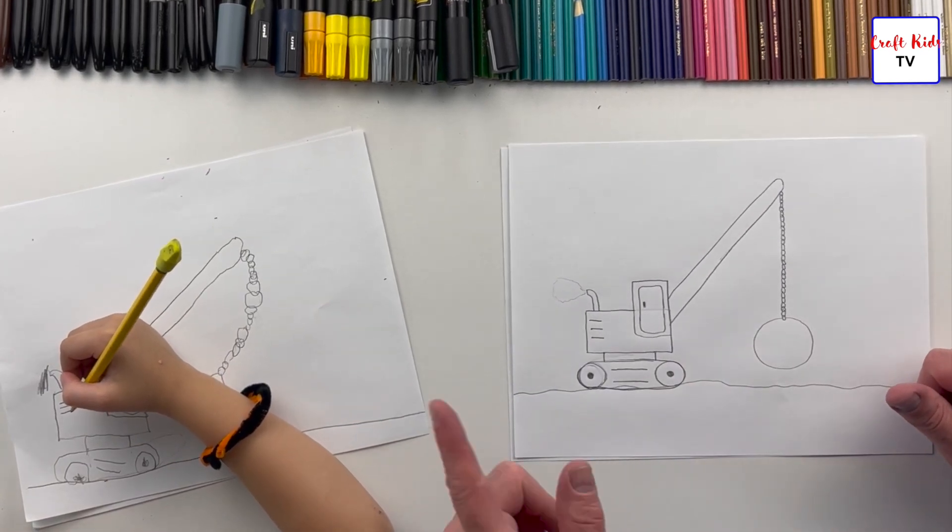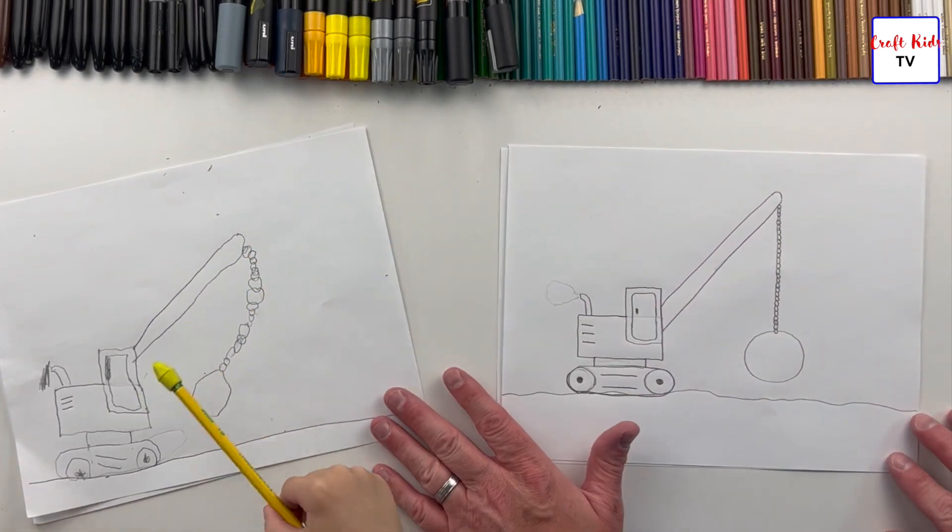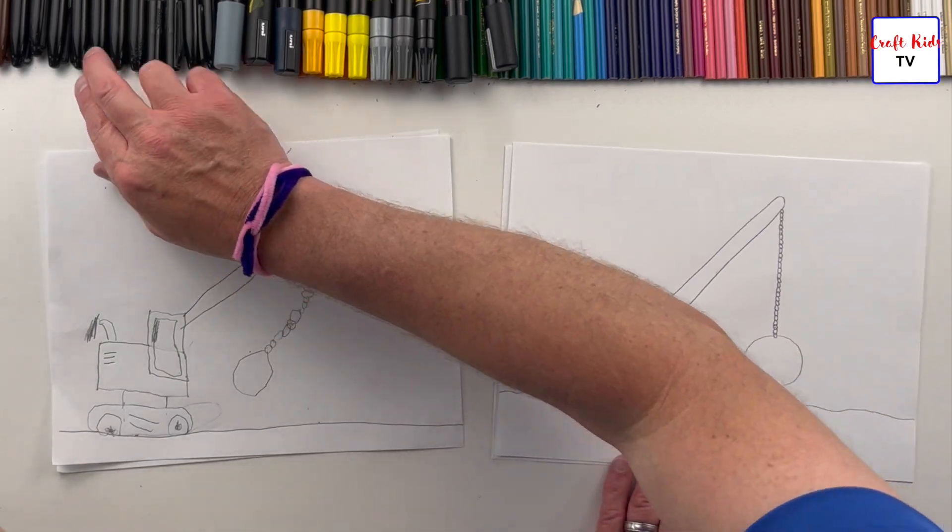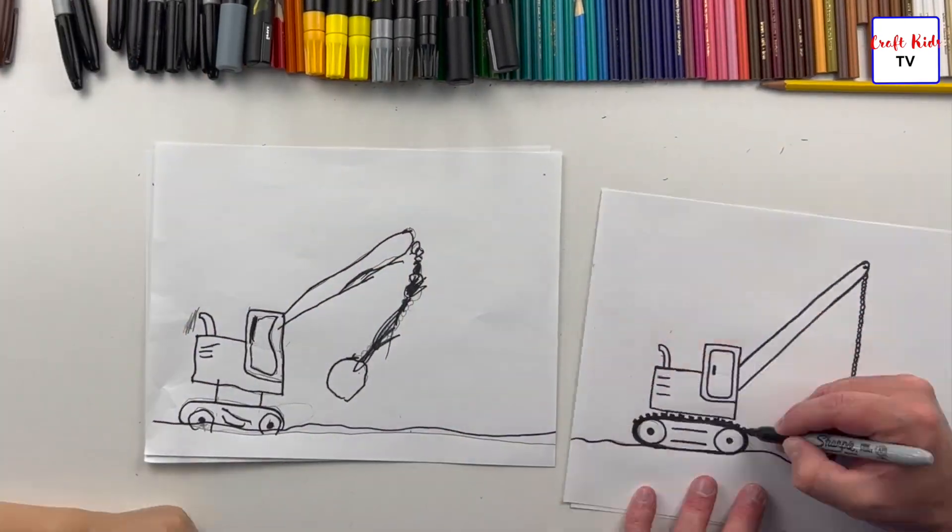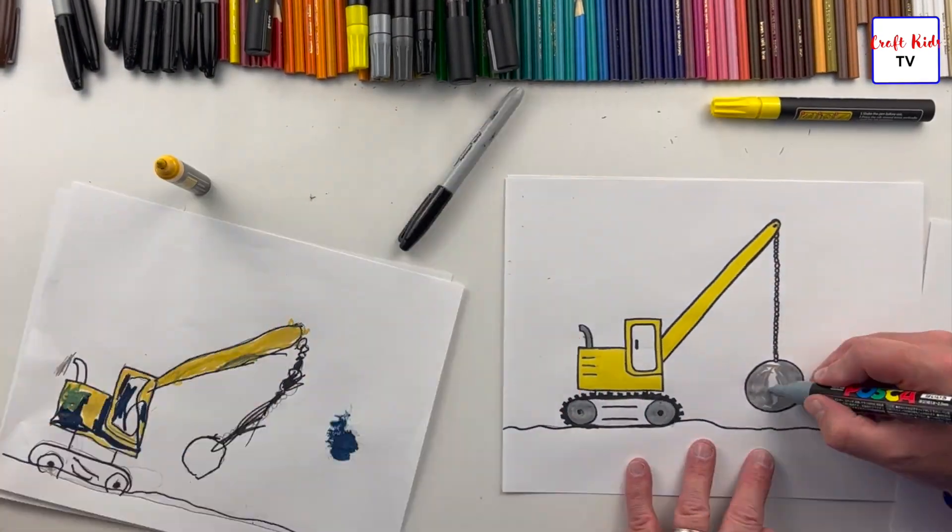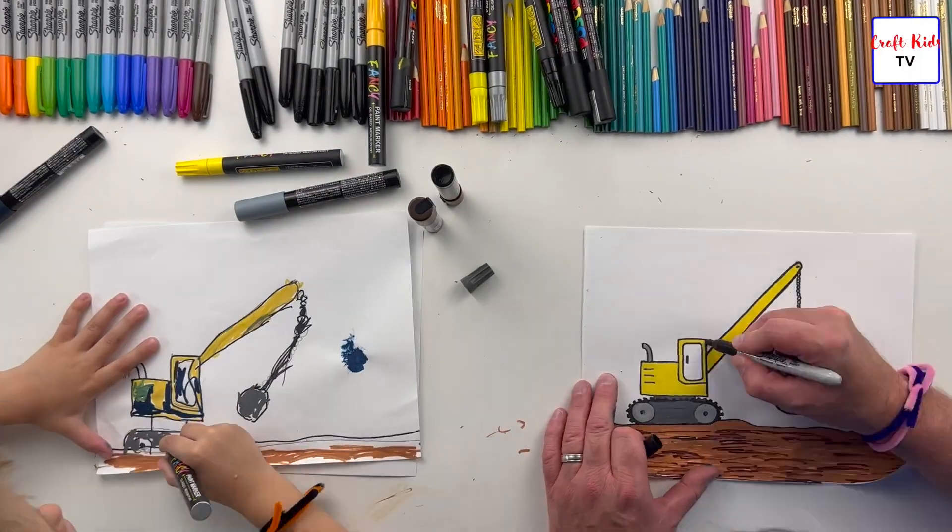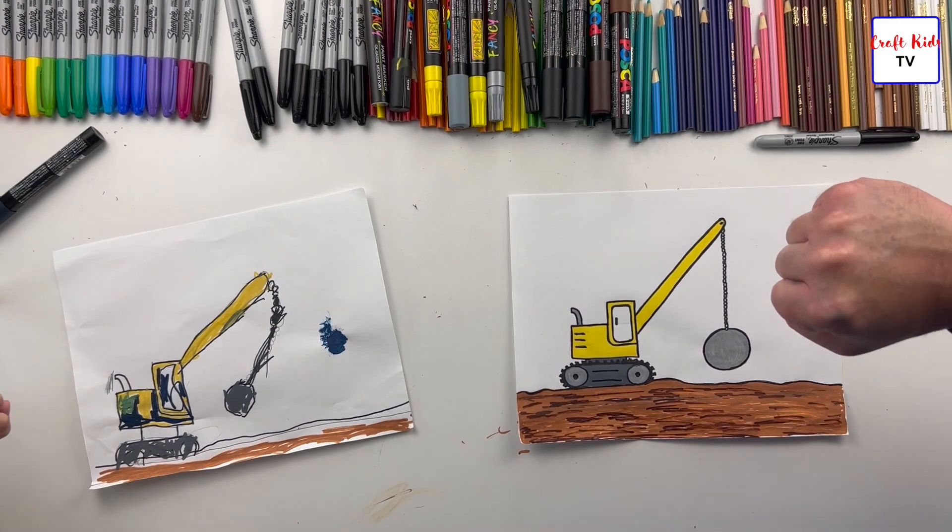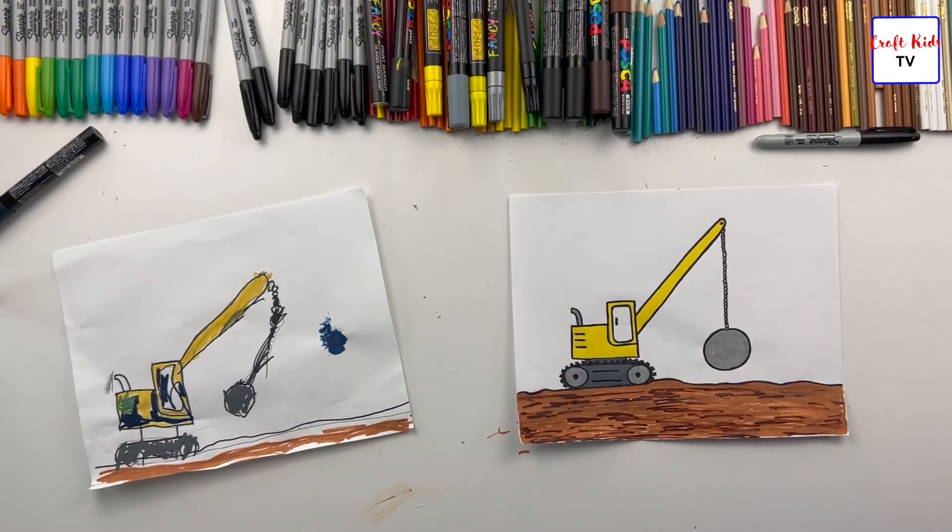Okay, now we're going to just use our sharpies to trace it, and then we're going to do some pasta. We are going to trace it first though. Ready? One, two, three, set, go. Wrecking balls!